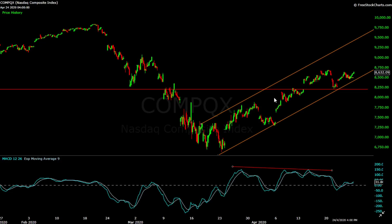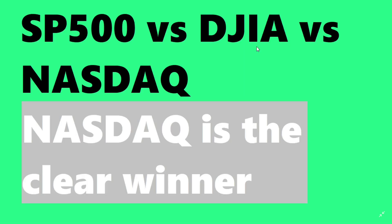Here's the hourly chart for the Nasdaq, and the picture is completely different from what we've seen for the S&P 500 and the Dow. First, the price has not broken through this trend channel at all. Second, the price is well supported by the previous support resistance line. Additionally, the steepness of wave 1 and wave 2 are comparable, so I would say the Nasdaq is still looking quite strong on the hourly chart as well.